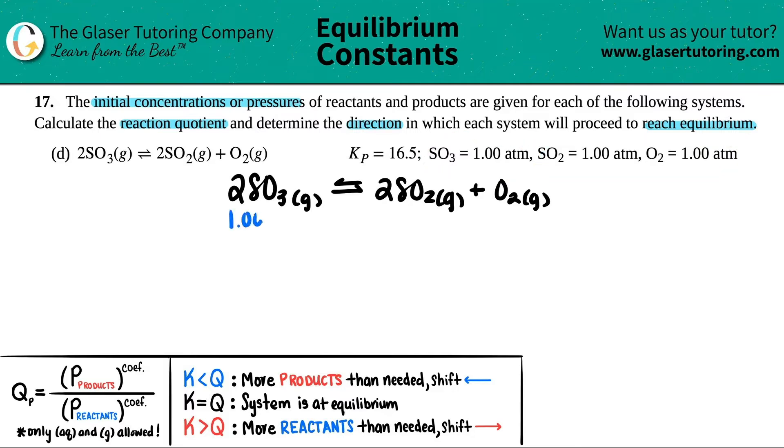For the SO₃ in the beginning, they told me that I had 1.00 atm. Perfect. And then for the products, they told me that for the SO₂ I had 1.00 atm, so I'm writing that down. And then for the O₂, the same number.